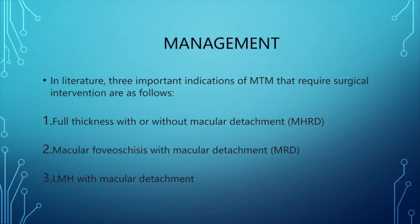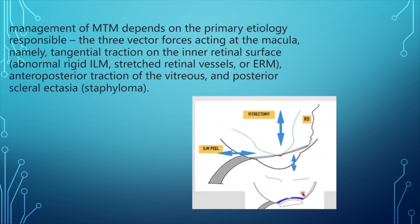Regarding the management of myopic tractional maculopathy, in the literature three important indications requiring surgical intervention have been described: full thickness macular hole with or without macular detachment, macular foveal schisis with macular detachment, and lamellar hole with macular detachment. The treatment primarily depends on the etiology responsible.